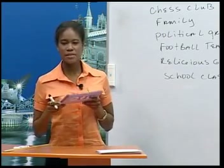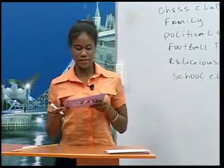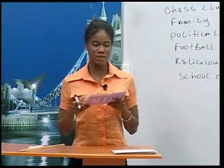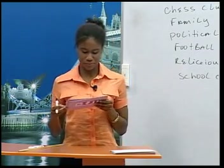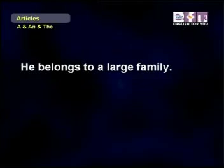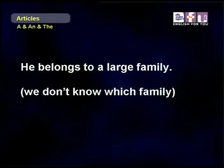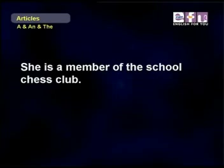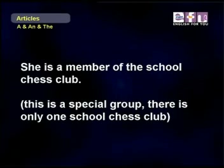We say 'an hour' because we don't pronounce the H, so it sounds like a vowel sound. Same with 'an honest man' — if we don't pronounce the H. We say 'a university' because university sounds like a Y sound. Same with 'a European' — we pronounce the E and it sounds like a Y. Now let's look at some examples of sentences using articles to talk about social groups.